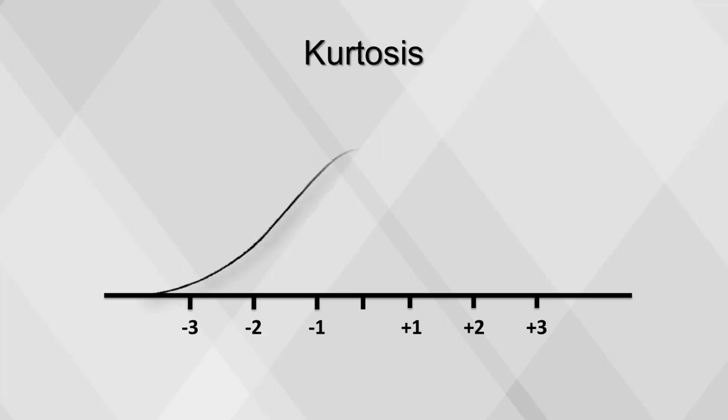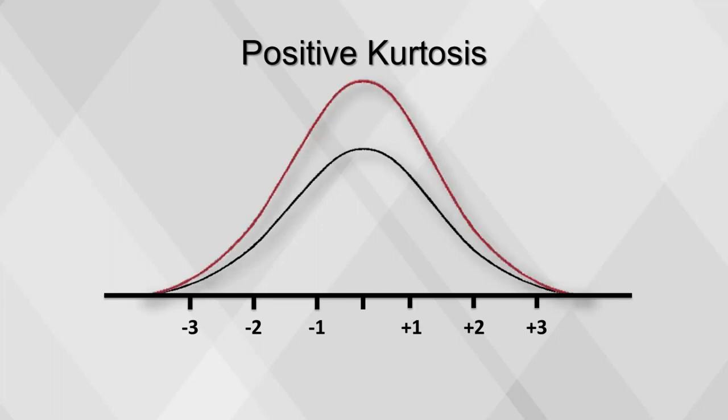Kurtosis is the measure that describes the size of the tails in a distribution. A distribution with positive kurtosis contains fewer values in the tails than a normal distribution.